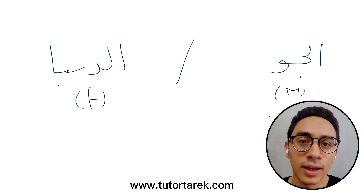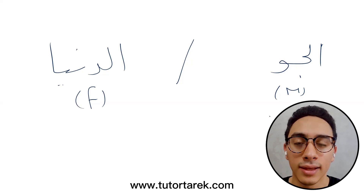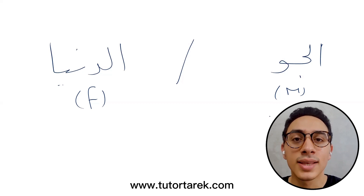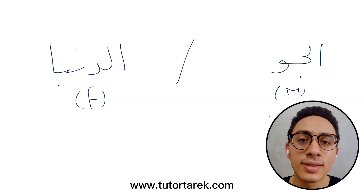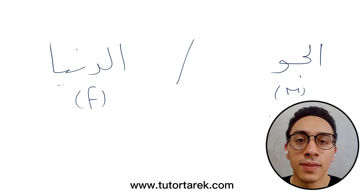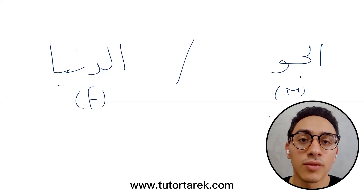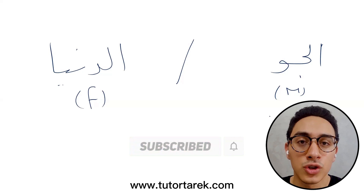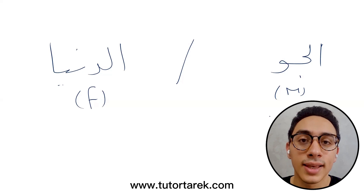To say 'how's the weather like?' in the Egyptian dialect, you say 'El-Gaw Amal-E.' If you remember from the greetings topic, 'Amal-E' means 'how are you,' but here it means 'how's the weather like.' You can say 'El-Gaw Amal-E il-Nahar-Da,' meaning 'how's the weather today?' Or if you're asking about the weather in another country because you're traveling there, you can say 'El-Gaw Amal-E fi Masr?' — how's the weather in Egypt?